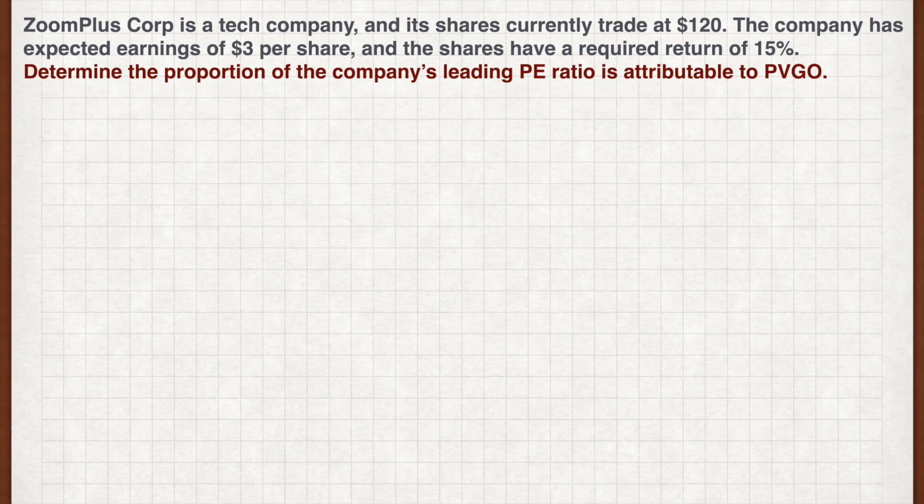Zoom Plus is a tech company, and its shares currently trade at $120. The company has expected earnings of $3 per share, and the shares have a required return of 15%. Determine the proportion of the company's leading PE ratio that's attributable to PVGO.